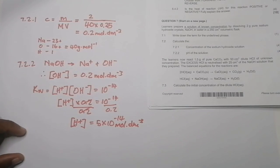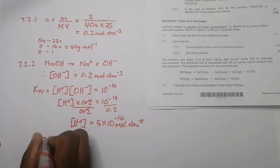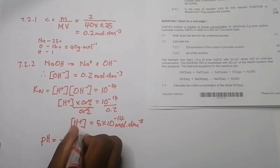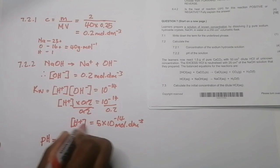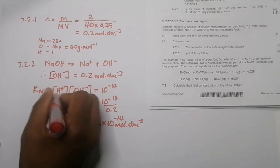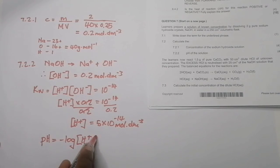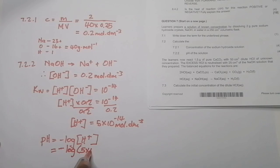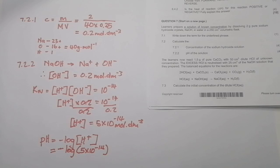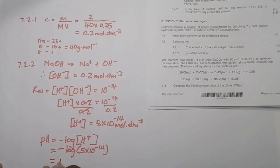Now that we have the hydronium ion concentration, we can calculate pH. pH = −log[H⁺] = −log(5 × 10⁻¹⁴), which gives an answer of 13.3. Note that pH has no units.